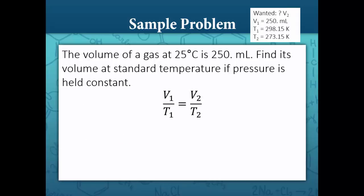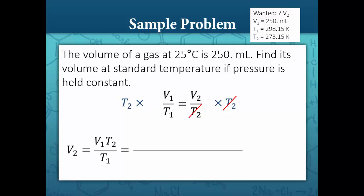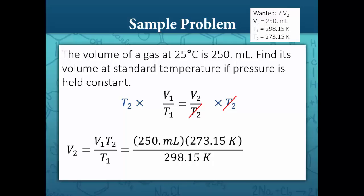To solve for V2 we need to isolate the variable. We'll do that by multiplying each side by T2. The T2's cancel out on the right-hand side, and our equation becomes V2 is equal to V1 times T2 over T1. V1, the initial volume, is 250 milliliters; T2 is 273.15 Kelvin; and the initial temperature T1 is 298.15 Kelvin. The units Kelvin cancel out, leaving units of milliliters. We multiply the numerators and divide by the denominator and get a new volume of 229 milliliters.